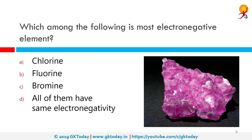Which among the following is the most electronegative element? The correct answer is chlorine. Electronegativity is an atom's relative ability to remove an electron pair in the formation of a covalent bond — that is, an atom's ability to steal a pair of electrons from the outer ring of another atom to make a covalent bond. Across the periodic table from left to right, this gets harder to do due to an increase in attraction forces between the nuclear charge and the outer electrons.